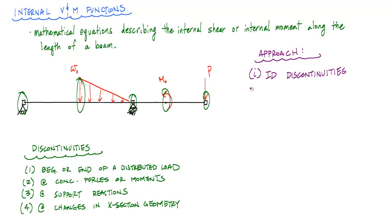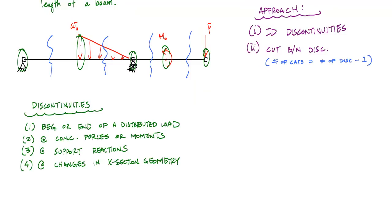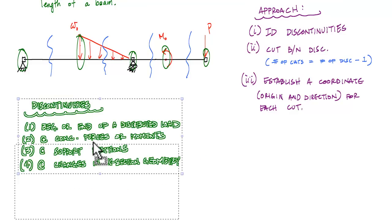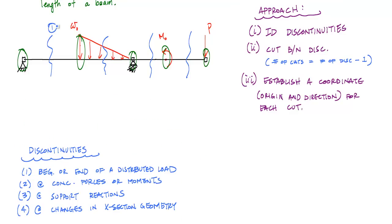In this example I identify five discontinuities: the beginning of the distributed load, the pin support, the roller support with the end of the distributed load, the concentrated moment location, and the concentrated force location. The next step is to cut between discontinuities. With five discontinuities I need four cuts — in general, the number of cuts equals the number of discontinuities minus one.